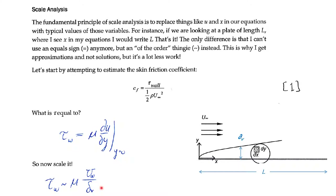We're not done, because you're looking at this and thinking: I don't have any clue what the boundary layer thickness is. I don't have an estimate for that. I might know the plate length L, but I don't know δᵥ. We're going to come back to that — let's call the shear stress scaling equation 2, and we'll go find the boundary layer thickness.